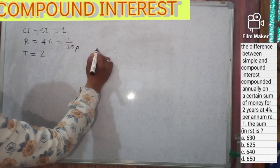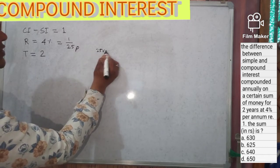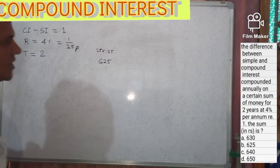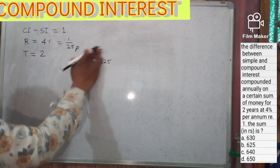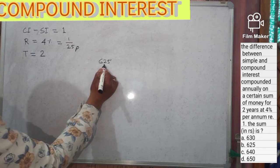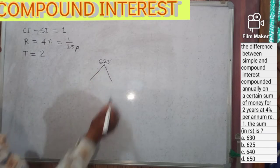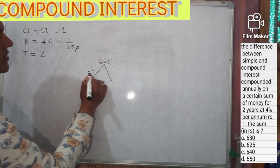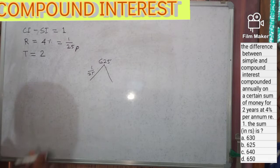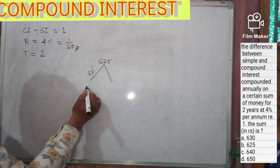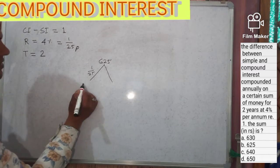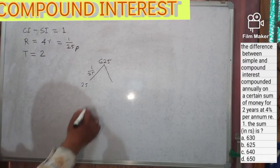Twenty-five into twenty-five is equal to six hundred and twenty-five, so this is the principle. We need it for two years, so draw two lines. The rate of interest is one by twenty-five, so the first year interest will be twenty-five.